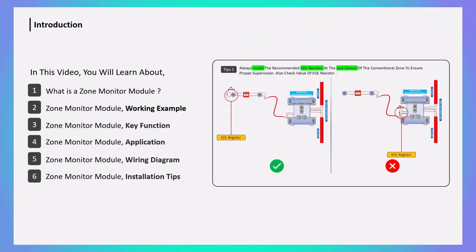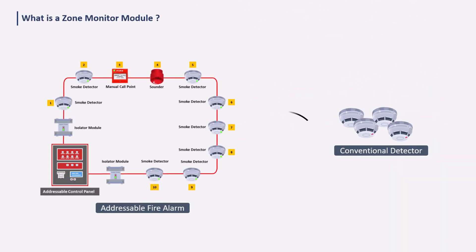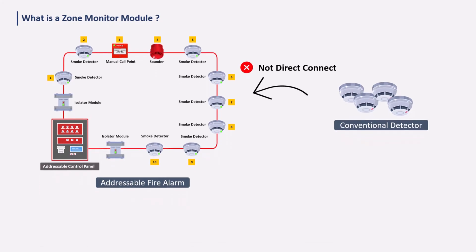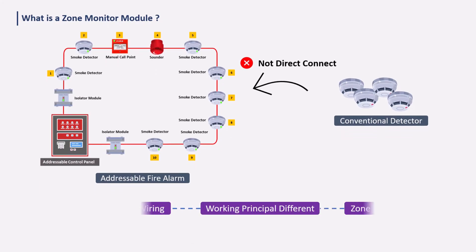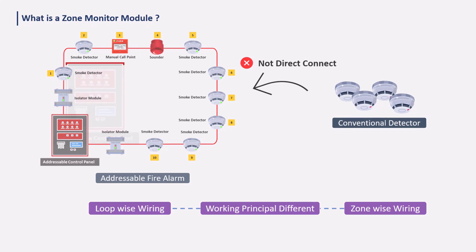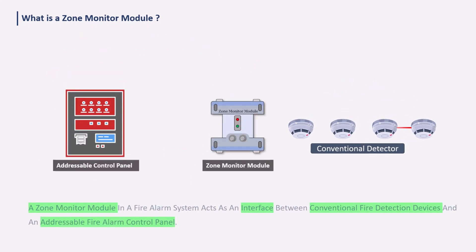We will understand what a zone monitor module is, how it works, its functions, in which applications it is used, how its wiring connection is done, and how it operates. Let's start. Conventional detectors cannot be directly connected with an addressable fire alarm loop because their working principles are different. Conventional detectors are wired zone-wise and addressable fire alarms are wired loop-wise.